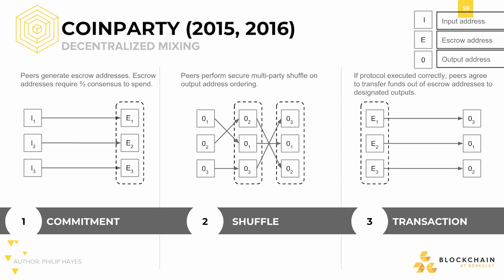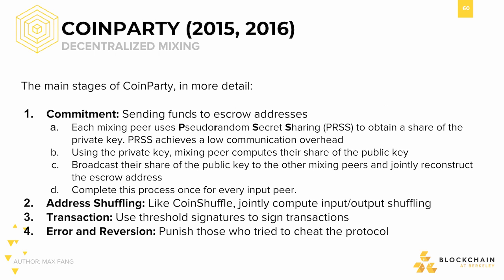During the commitment step, peers will generate an escrow address each. These escrow addresses require two-thirds consensus in order to spend. During the shuffling step, the peers perform a secure multi-party shuffle to scramble the output address ordering. Finally, during the transaction step, the peers will agree to transfer out of the escrow addresses to their designated outputs. For the commitment scheme, each mixing peer uses what's known as pseudorandom secret sharing, in which each peer obtains a portion of the private key. Via this portion of the private key, each peer can construct a portion of their public key. Then, by combining their portions of the public key with their peers, they can broadcast their shares to jointly reconstruct the escrow address.